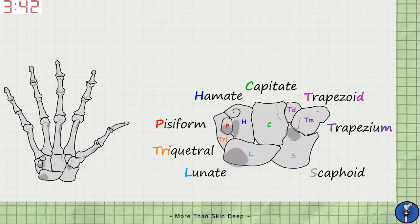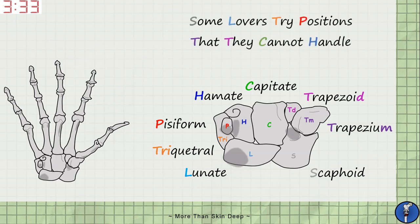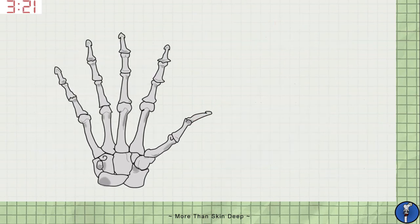Now we have a lot of names to remember, so I feel a mnemonic is in order. The one I remember is a little rude, but I find that it tends to make it stick a little better. It is: 'Some Lovers Try Positions That They Cannot Handle,' where the first letter of each word corresponds to a different carpal bone. You can remember it how you like, but for some reason this one resonates with me.